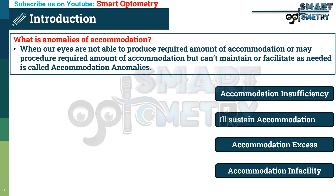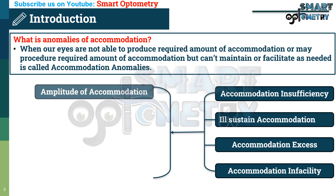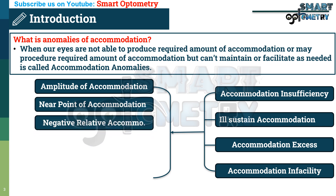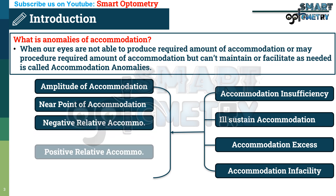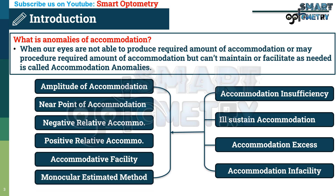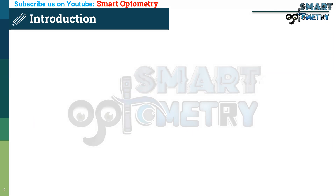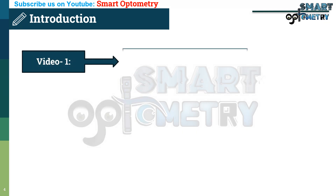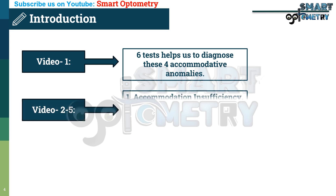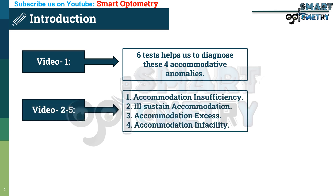The six tests that allow us to identify these anomalies are: 1. Amplitude of accommodation, 2. Near point of accommodation, 3. Negative relative accommodation, 4. Positive relative accommodation, 5. Accommodation facility, and 6. Monocular estimated method. In this video, I will discuss how these six tests help us diagnose these four accommodative anomalies. In coming videos, I will discuss separately about each of these four anomalies.